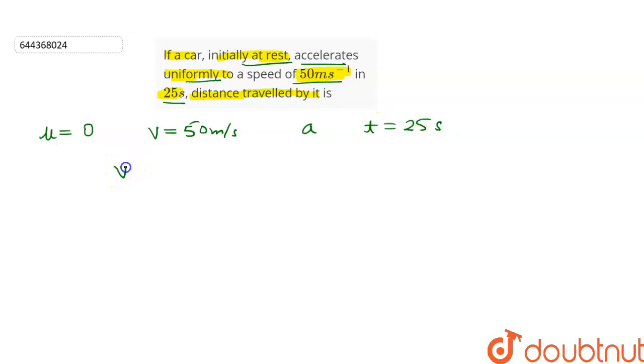We can use the formula v equals u plus at. Let's substitute the values in this equation to calculate the acceleration. This will give us 50 equals zero plus a times 25, and after simplifying we get acceleration equals 2 meters per second squared.